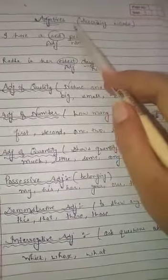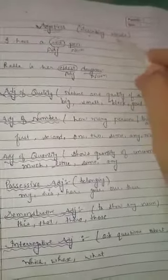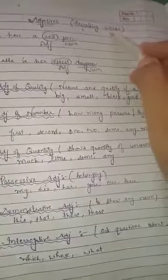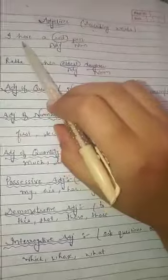So you should know first of all what are adjectives. Adjectives are some describing words. The words which are used to describe anything, which are used to describe a person or anything, are called adjectives. For example, I write a sentence: I have a red pen.